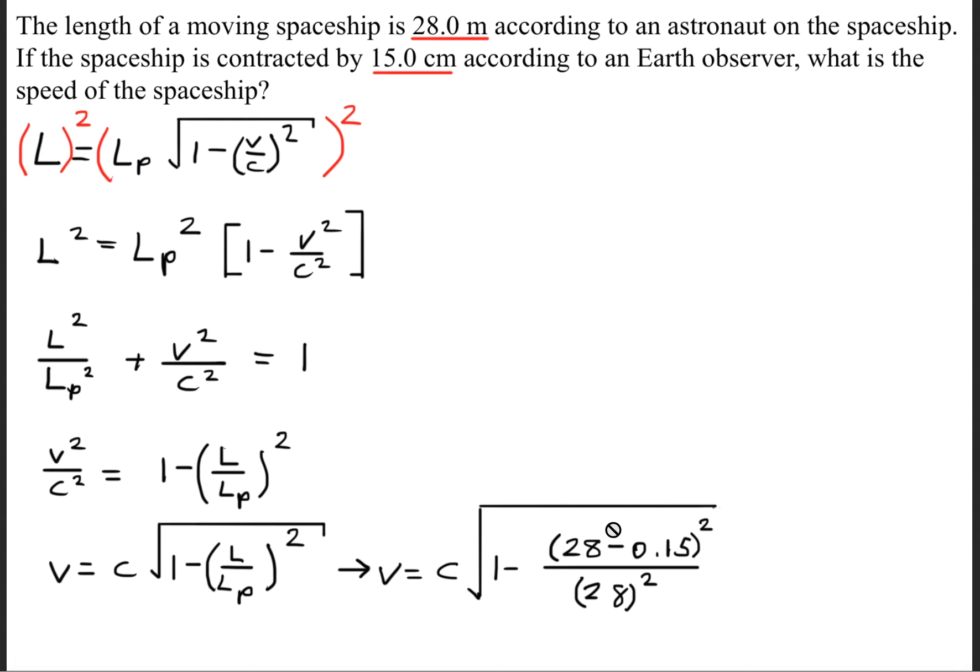When we plug in all the numbers, we get that the velocity equals 0.103 times the speed of light. This is typical of what your solutions will be.